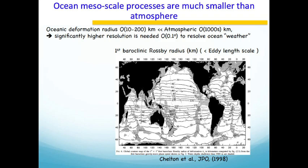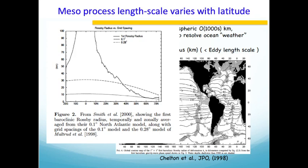Mesoscale processes in the ocean are difficult to model or resolve. A second thing is that these mesoscale processes also vary with latitude. Looking at this chart, you can see that with latitude the mesoscale process is changing — what I'm showing is something known as the primary mesoscale process. It is easy to find out the length scale of a primary mesoscale process using theory, and that is the basis on which we set the model resolutions.